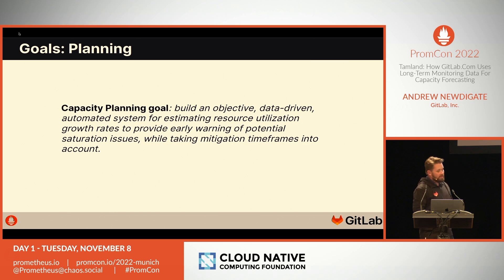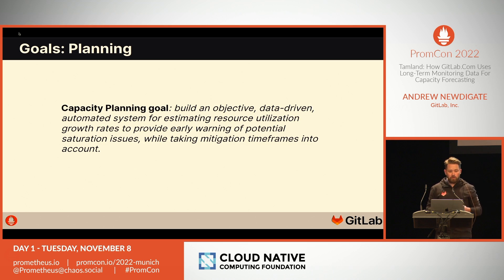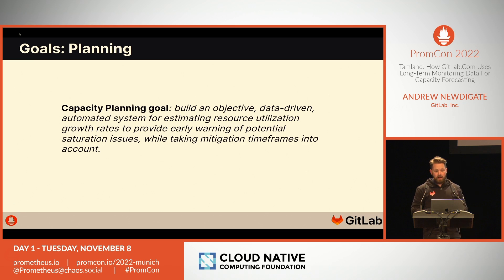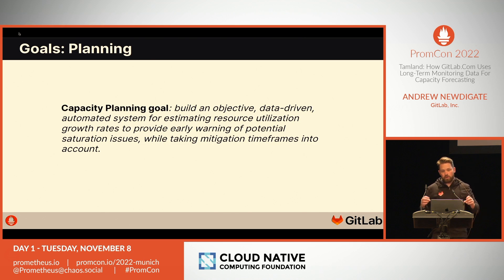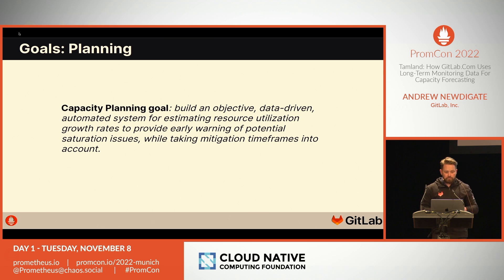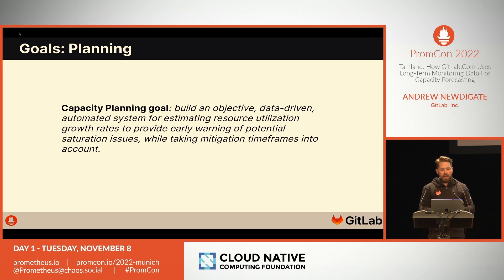The goal of our capacity planning process is to focus on resources with high risk or long mitigation times, and ensure we're keeping track of utilization and growth so we can plan ahead. We want to build an objective, data-driven approach to estimating capacity, and we want it to be automated so we can scale it to cover all resources within our system. We do this by breaking each service down into its constituent resources, forecasting growth on those resources individually, and then building a roadmap of engineering efforts prioritized according to urgency, severity, and mitigation time.